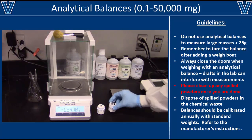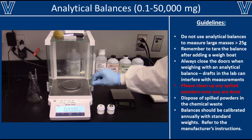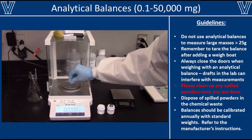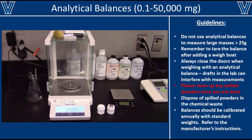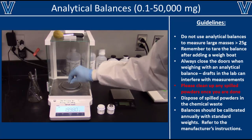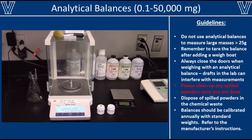Just like a pipetter, an analytical balance can also become inaccurate over time. To test the accuracy of an analytical balance, you'll need two standardized weights at the upper and lower bounds of the balance. In this case, we're using 2 and 50 gram weights. Notice that the 2 gram weight is reading 1.998 grams, which is less than 1% inaccurate, so that's pretty good. Next, we test the 50 gram weight, which weighs out to be 49.95 grams. This is also greater than 99.9% accurate, so the balance is working properly. If these readings were significantly off, we would need to calibrate the balance. Refer to the manufacturer's instructions on how to do so, or let your supervisor know immediately.